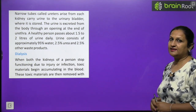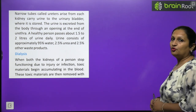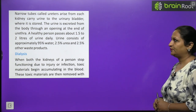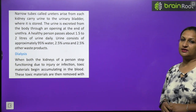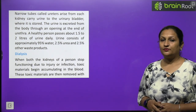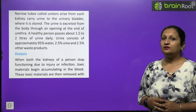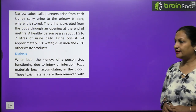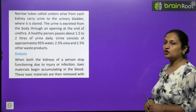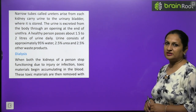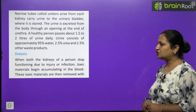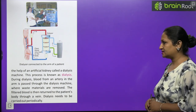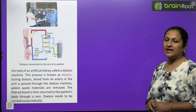Urine contains 95% water, 2.5% urea, and 2.5% other waste products. If someone's kidneys fail, they are not able to filter the blood and urine production stops. In such cases, the doctor recommends dialysis. When both kidneys stop functioning due to injury or infection, toxic materials accumulate in the blood and are then removed with the help of an artificial kidney called a dialysis machine. This process is known as dialysis.